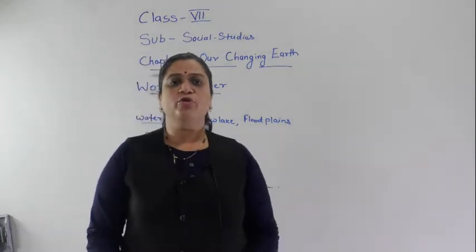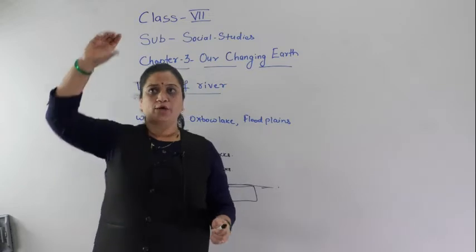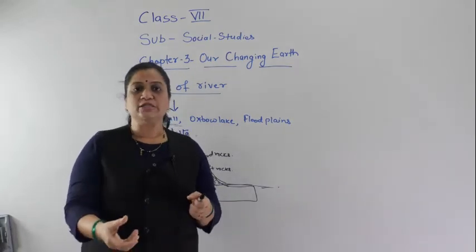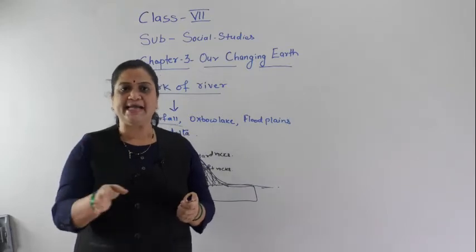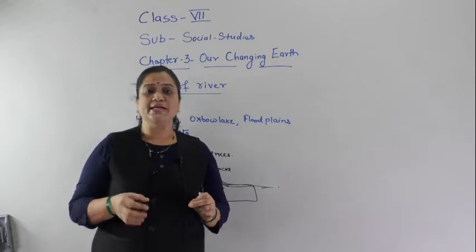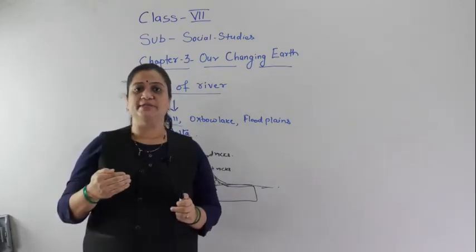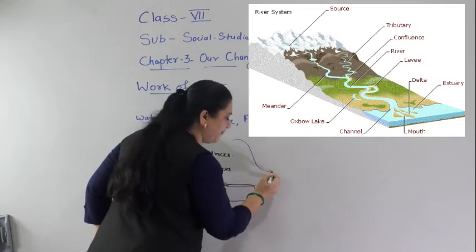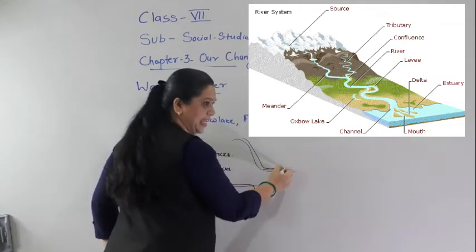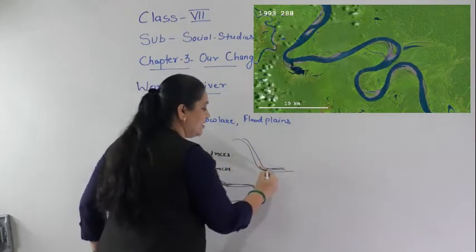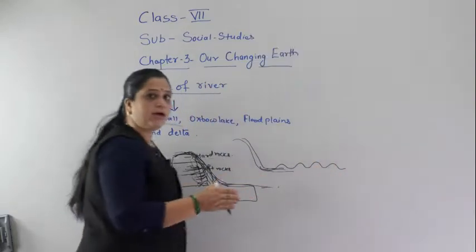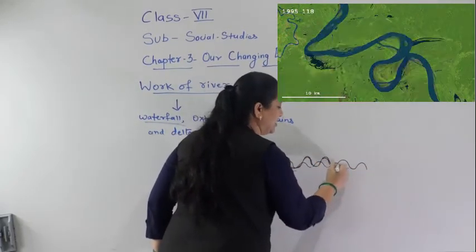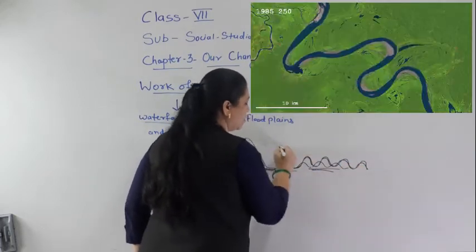Let me give you one example. If you take a glass of water and pour it on your head, it falls with great force directly. But if you throw it on a floor, it flows slowly taking a different shape. In the same way, when the river originates from the mountains and falls, it comes with great force, but when it enters the plain, its speed decreases. Because of the unequal level of the plain surface, it flows in a curved shape. These curves are called meanders.